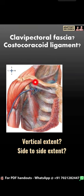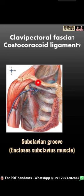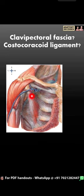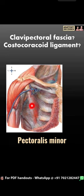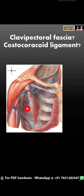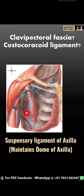It starts from the subclavian groove where it encloses the subclavius muscle, then it further extends down to enclose the pectoralis minor muscle, then it extends down as the suspensory ligament of axilla to fuse with the axillary fascia. This suspensory ligament helps in maintaining the dome of the axilla.